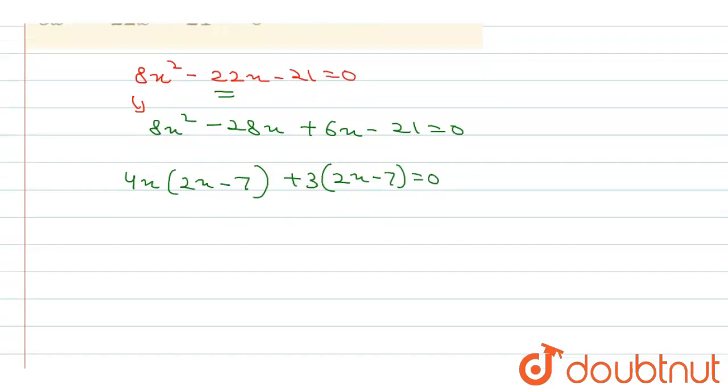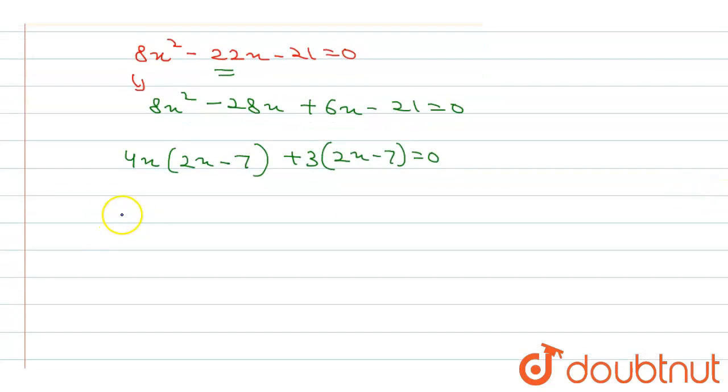So from here we can get 4x plus 3 and 2x minus 7 equal to 0. So from here we have 2 cases, either 4x plus 3 equal to 0 or 2x minus 7 equal to 0.